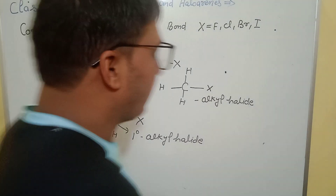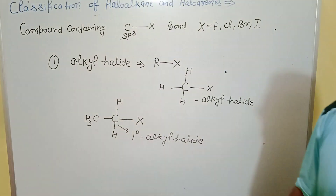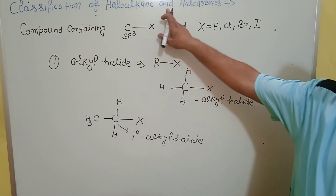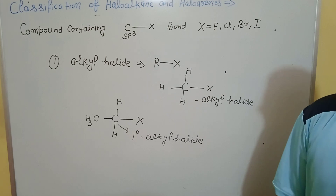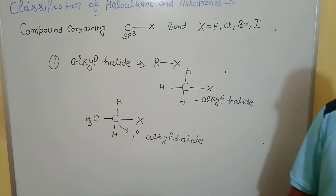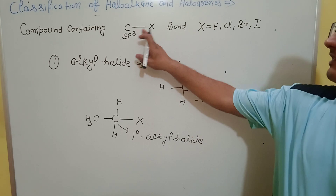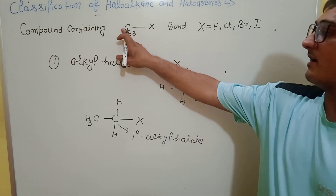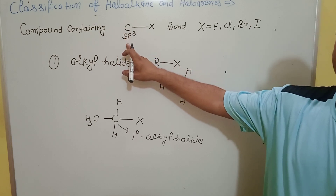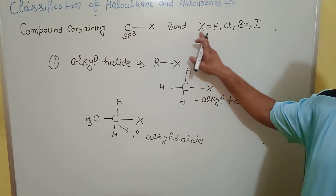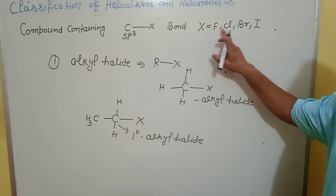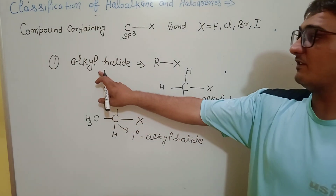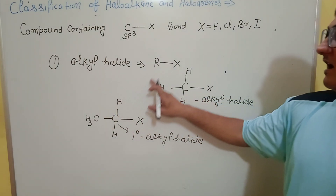In this class we study the classification of haloalkanes and haloarenes. The classification is based on the carbon-halogen bond (CX), where the carbon atom is sp3 hybridized. The halogen X can be fluorine, chlorine, bromine, or iodine. The first classification is based on alkyl halides, where R is an alkyl group giving R-X.